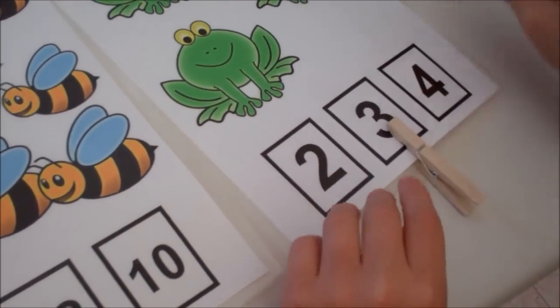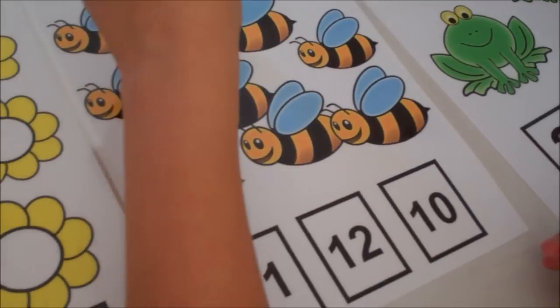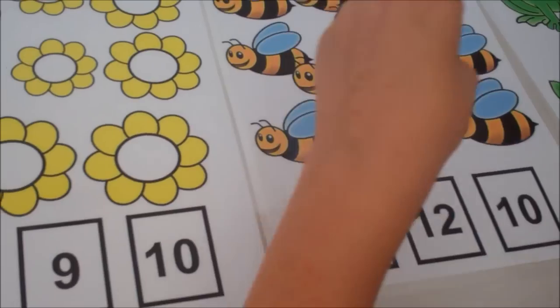And they would place a clothespin then on the number that they thought that it was. One, two, three, four, five, six, seven, eight, nine, ten.